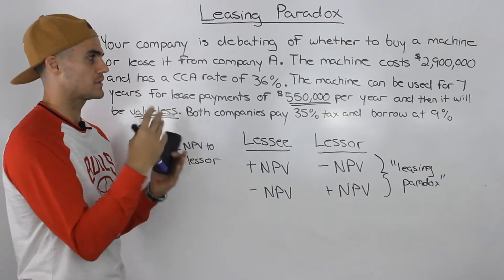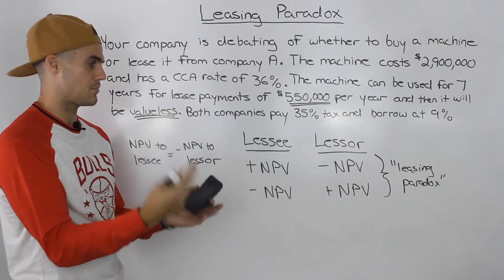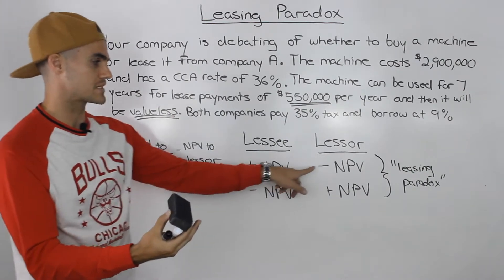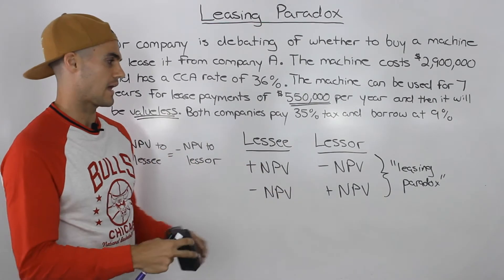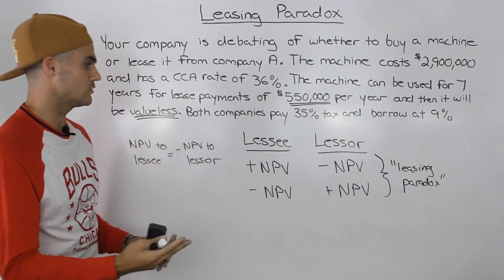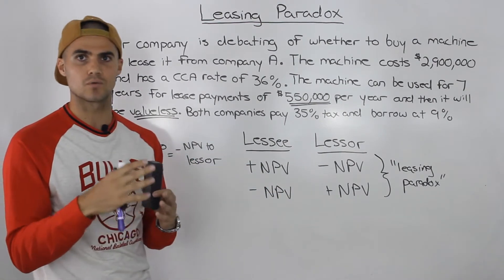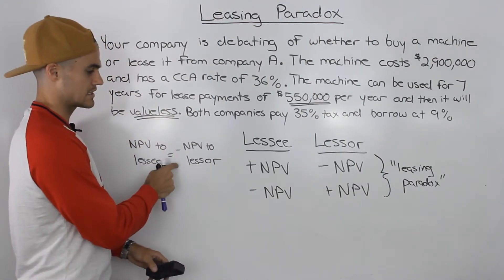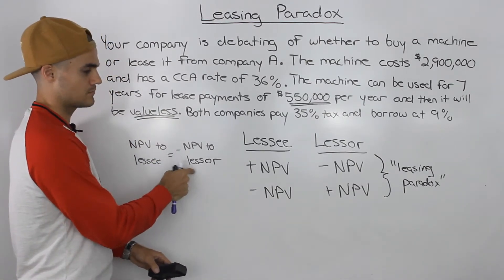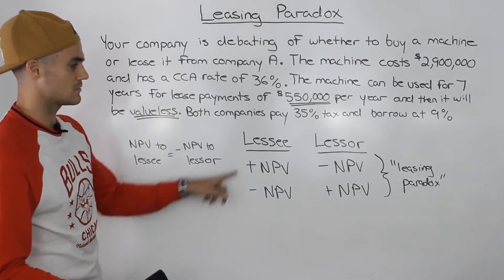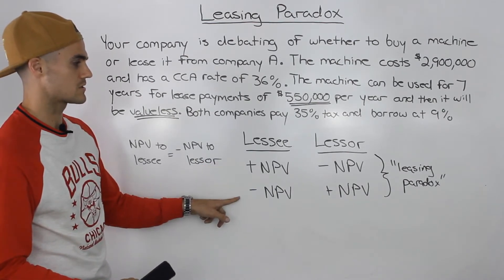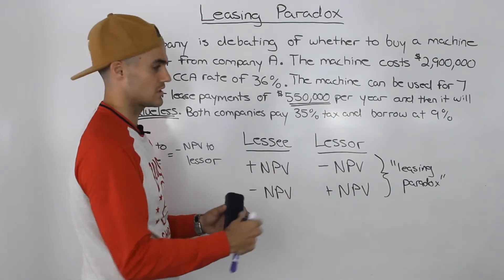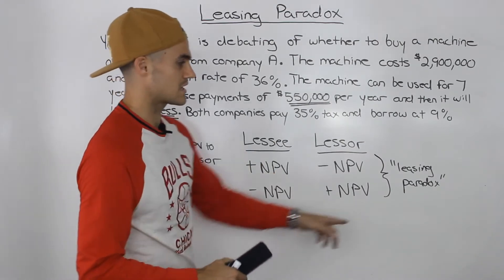From the lessee's point of view we got a positive NPV, but from the lessor's point of view it was a negative NPV. We concluded that that's always going to happen with what we know so far — the NPV to the lessee is going to be negative NPV to the lessor. So it's going to be one of these two scenarios, and basically this is a win-lose situation — so it's a paradox.